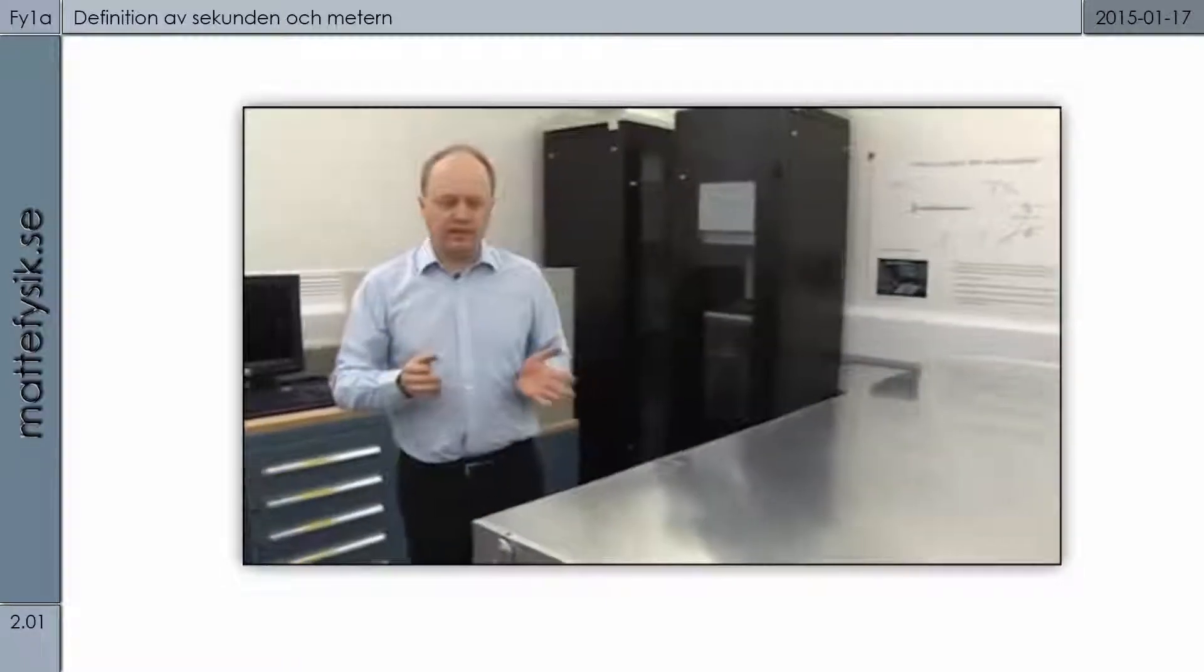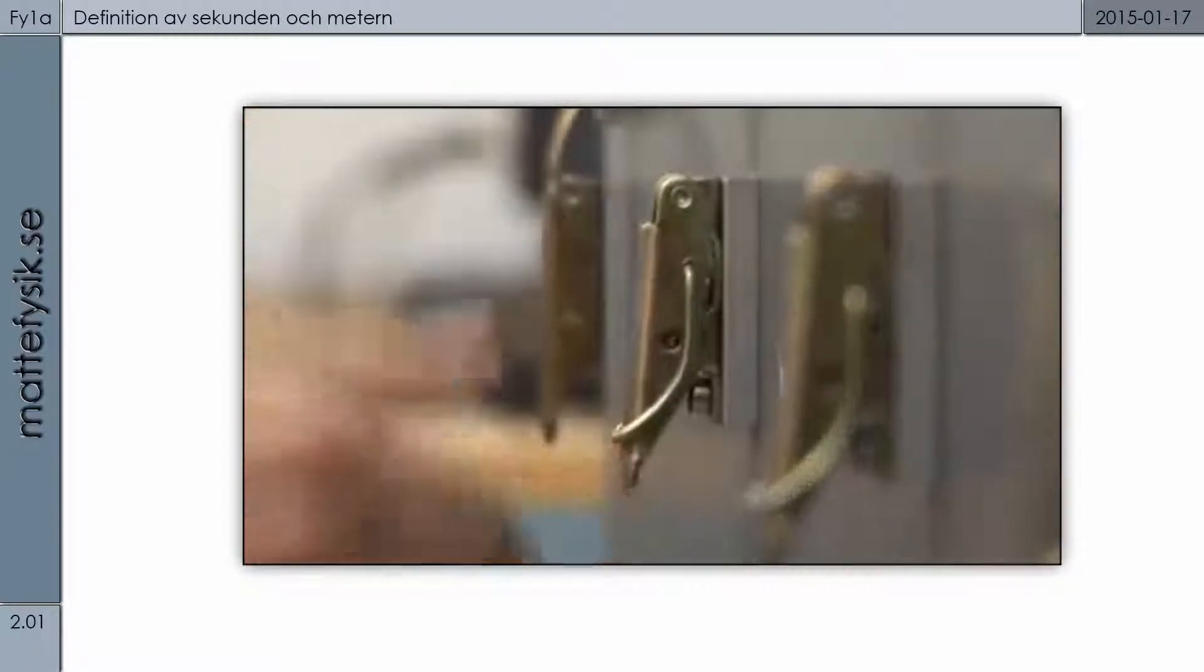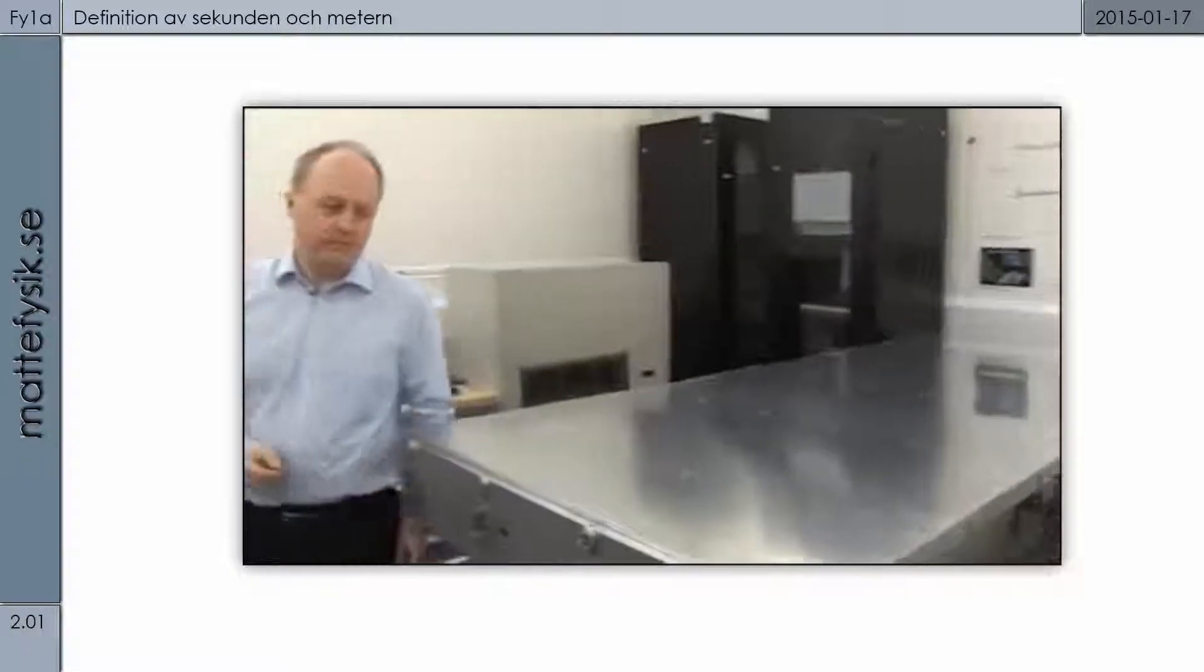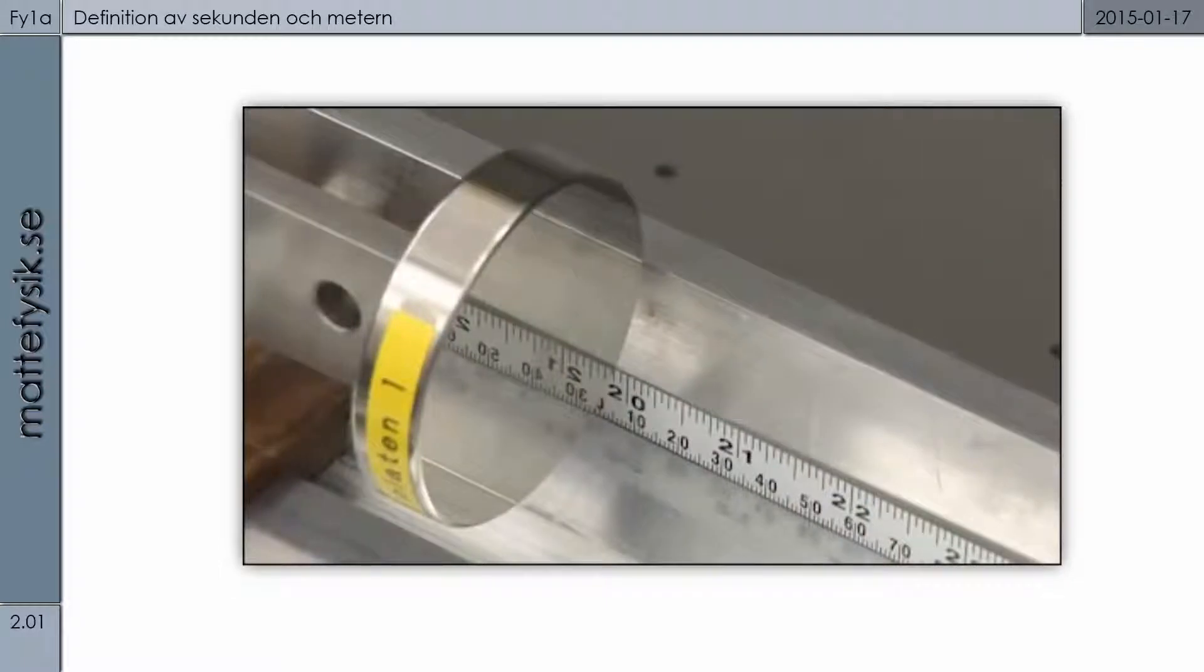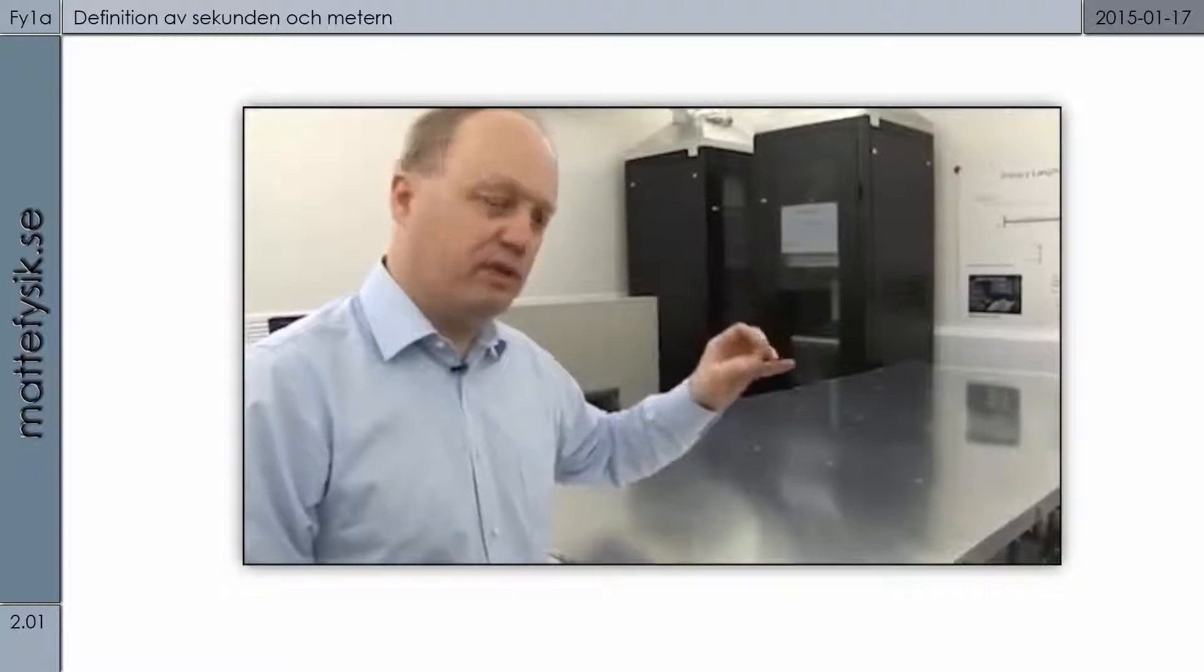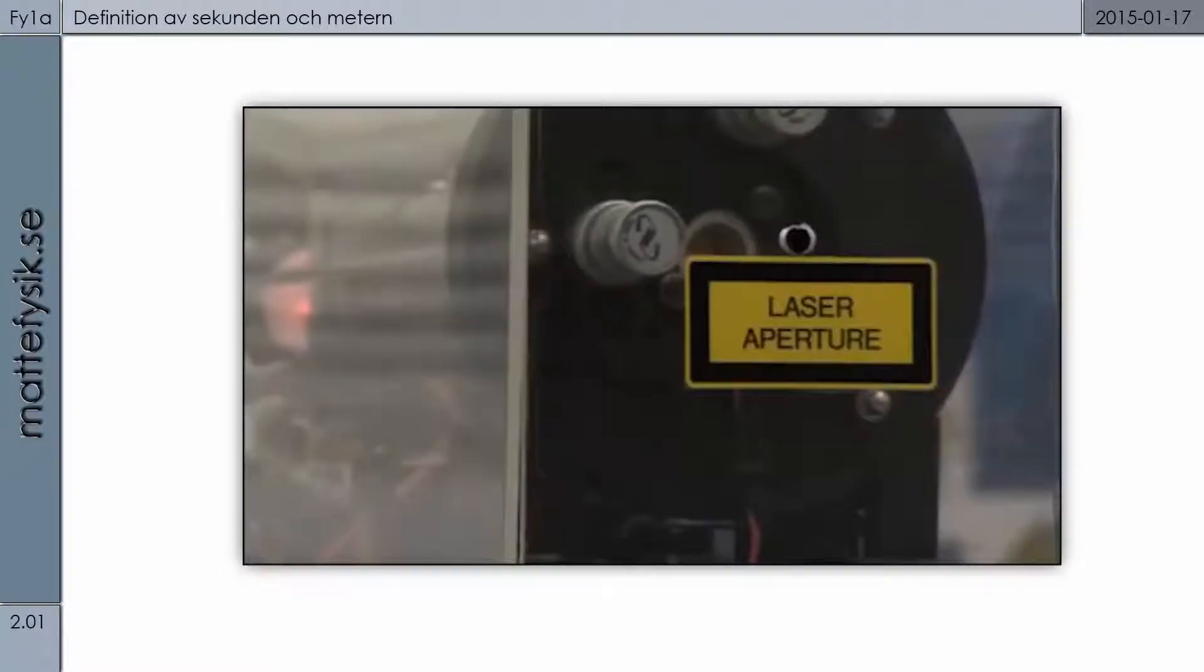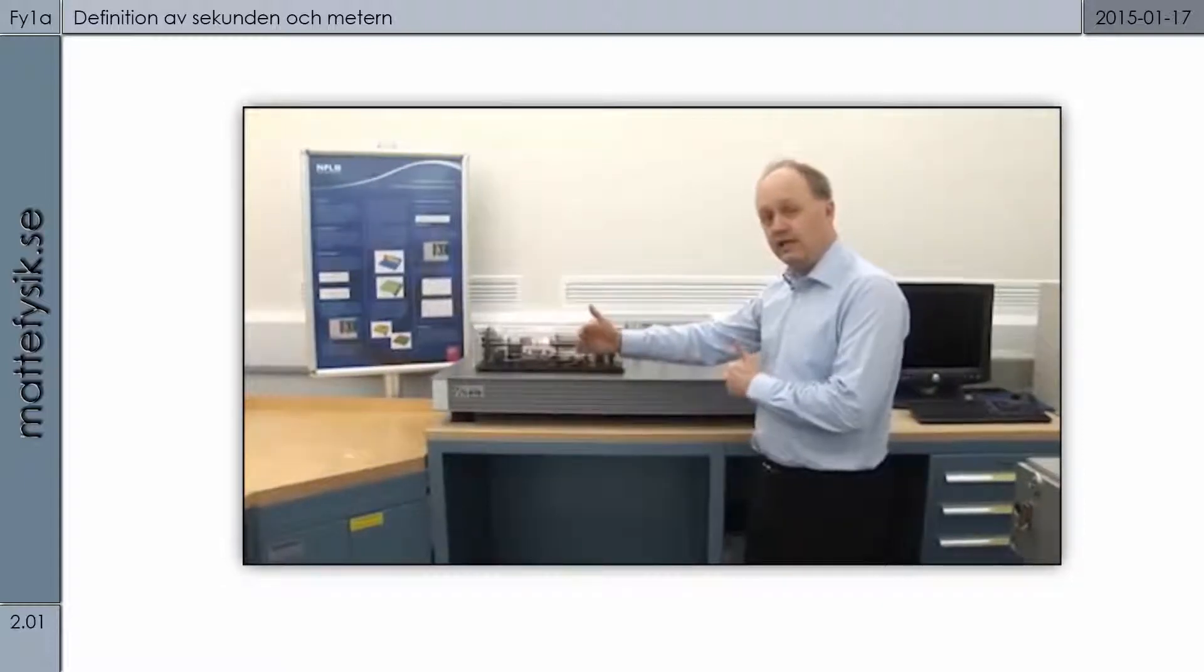The problem with the definition of the meter as it stands is that it's very difficult to realize in practice. You need to have a very, very accurate source of timing. Instead, we can use a process called interferometry. In an interferometer such as this one, we can actually compare the length of physical objects against the wavelength of light. To do this, we need a wavelength which is very, very precise and accurately reproducible. So, for that, we need a very precise laser, such as this laser which we have here. This is one of the lasers that we use to realize the definition of the meter here at NPL. The laser emits a light of one particular wavelength. It's monochromatic. We use light from this laser in the interferometer and compare the wavelength of the light directly against the length of the object that we're measuring.